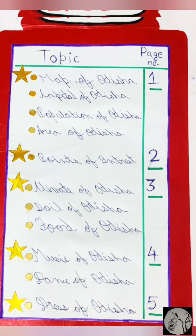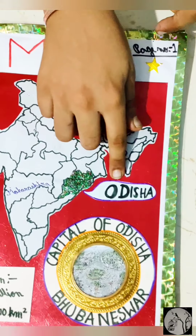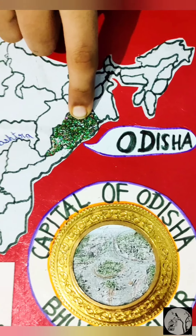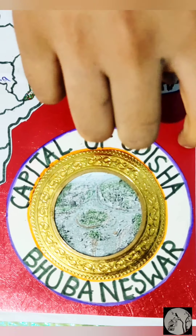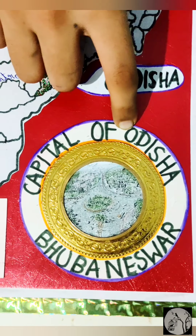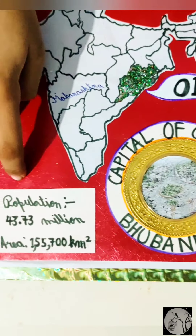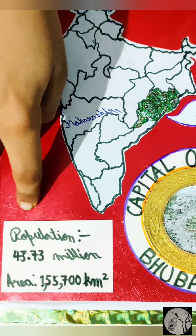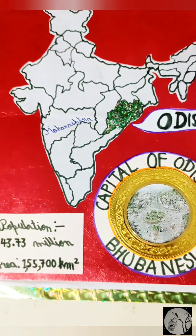Now my project starts. This is a map of India and here I marked Odisha. Here I am showing the capital of Odisha, which is Bhubaneswar. Here I have written the population and area of Odisha.